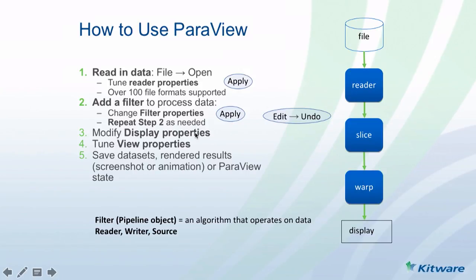You change display properties and view properties. After you're happy with the image, you can save the data at the end of your pipeline, save an image, or save the ParaView state. The ParaView state is used to restore exactly the processing pipeline you have in your program — you can use that to start where you left off the next day, or send it to a colleague so they see the same processing pipeline.